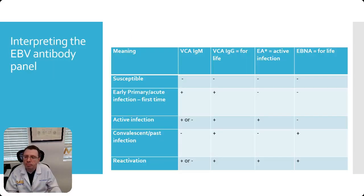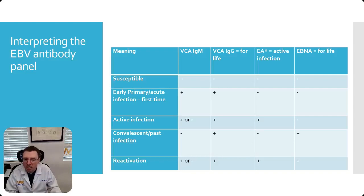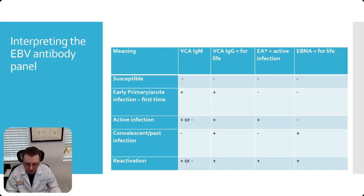Let's look at the interpretation. If everything is negative, you're still susceptible — you're probably in the lucky 5% of the population. In early acute infection — the first time you've ever had Epstein-Barr — you'll see VCA IgM positive and VCA IgG positive, but the other two will be negative. During an active infection, the IgM may go away after two to four weeks, but the IgG will persist — actually IgG will persist for life for most people. EA is important because it signals an active infection — it forms later, not early in the infection, but while you're still infected before you've recovered.